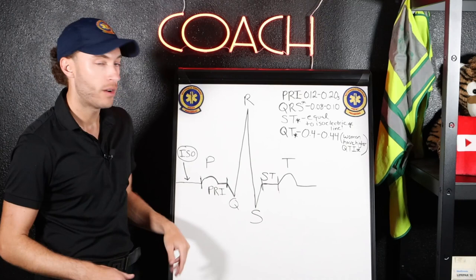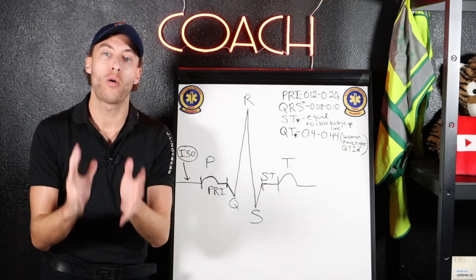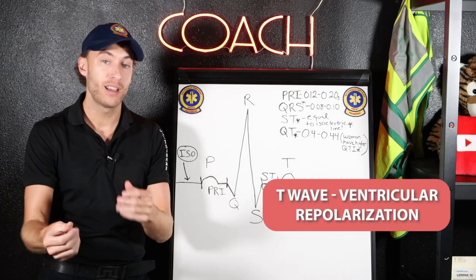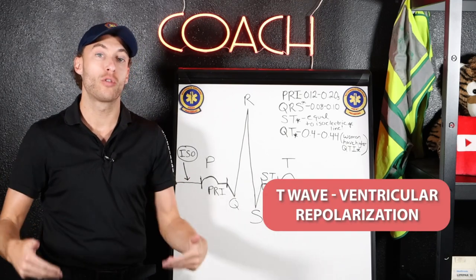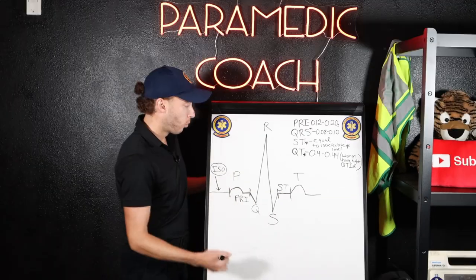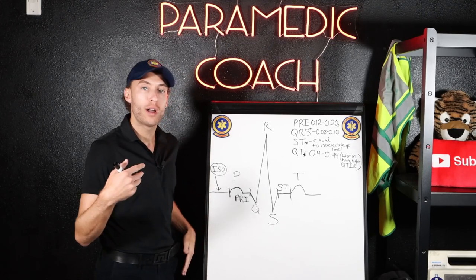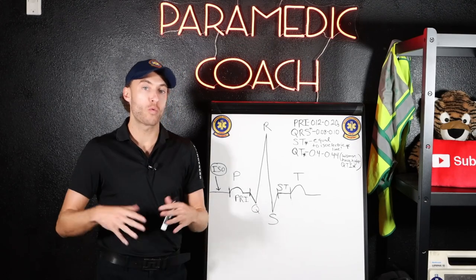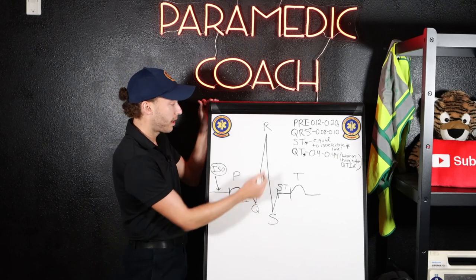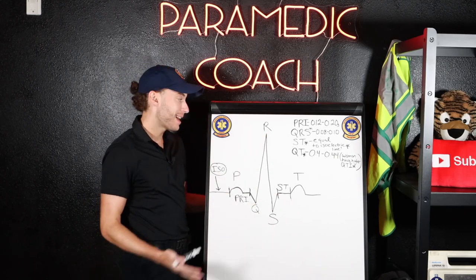The T wave is when the ventricles repolarize — 're' sounds like relax, so that's when the ventricles relax. Where does the atria relax? There's no atrial repolarization visible on EKG because the QRS complex is so large, it's hidden.